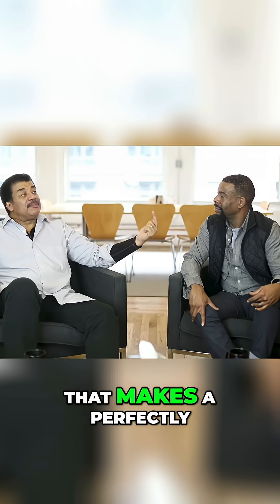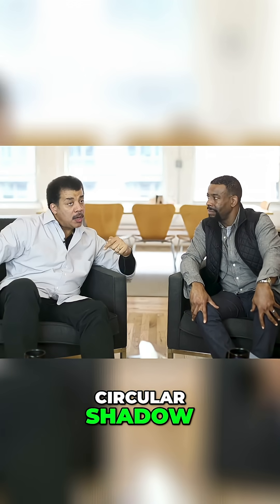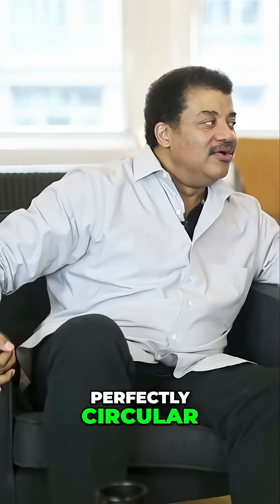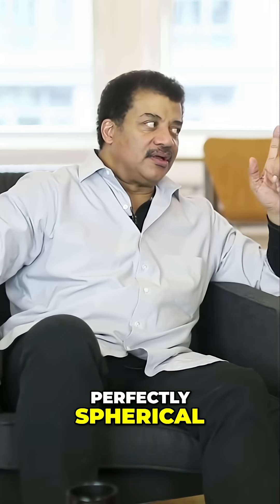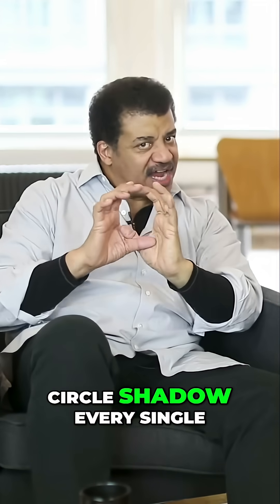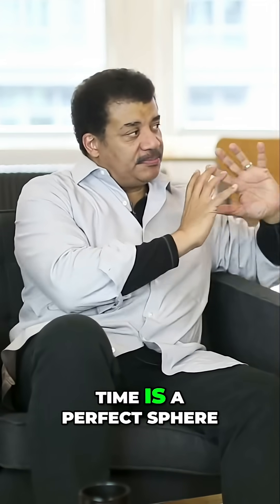And the only thing that makes a perfectly circular shadow would be something that's perfectly spherical. So the only thing that makes a perfect circle shadow every single time is a perfect sphere.